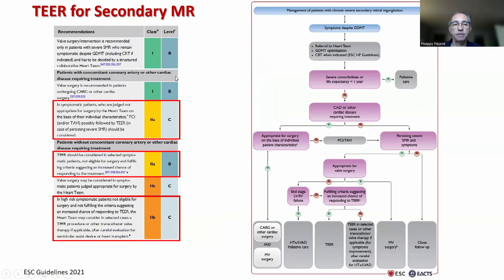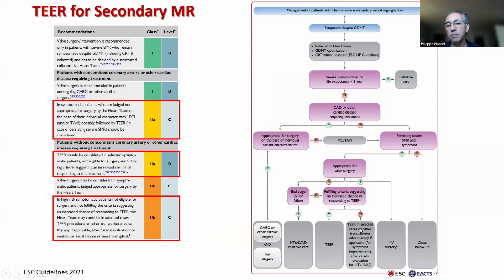What are the guidelines for indication of TER for secondary MR? First, you need a chronic severe secondary MR with persistent symptoms, patients not appropriate for valve surgery, not having end-stage LV failure — otherwise consider palliative care — and fulfilling criteria suggesting an increased chance of responding to TER. The guidelines are relatively vague on this last step.